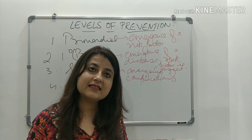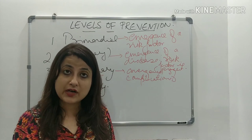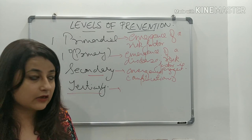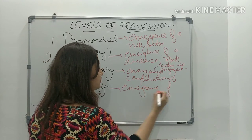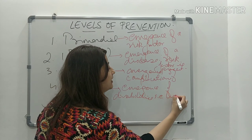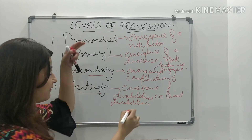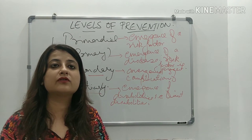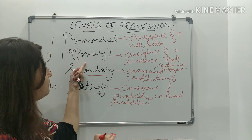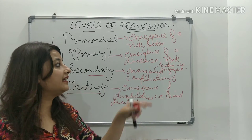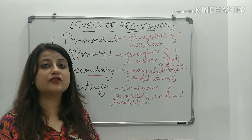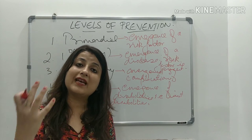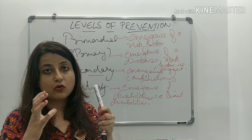In tertiary level of prevention, the disease has progressed to its advanced stages and complications have occurred. What we are trying to do is prevent the emergence of disabilities, or in other words, limit disabilities. So at each level we are preventing a certain emergence: primordial prevents emergence of risk factors, primary prevents emergence of disease, secondary prevents emergence of complications, and tertiary prevents emergence of or limits disabilities.